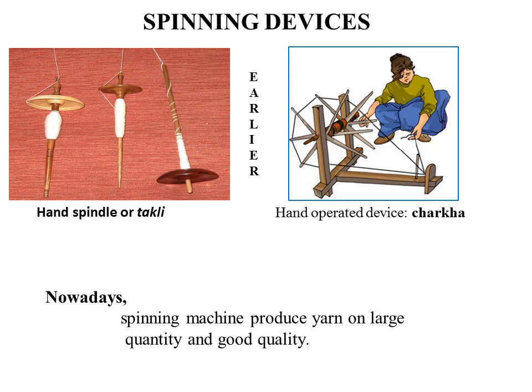To continue the spinning process, there is a need for spinning devices. In earlier times, people used a hand spindle or tukli, and also a hand-operated device called a charkha. The charkha was an icon of Mahatma Gandhi during the pre-independence movement, as it was popularized by him.